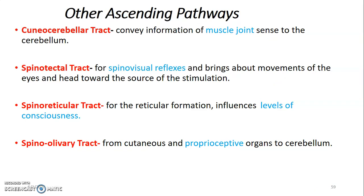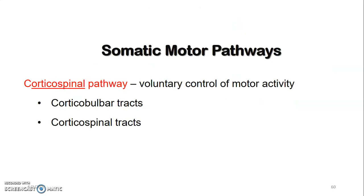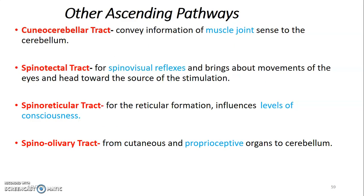Other ascending pathways include the cuneocerebellar tract, carrying information from muscles and joints to the cerebellum; the spinotectal tract, carrying information for spinal visual reflexes that bring about movements of the eye and head; the spinoreticular tract, which regulates levels of consciousness; and the spino-olivary tract from cochlear and proprioceptive organs of the cerebellum. That concludes the ascending pathways — the next lecture will discuss descending pathways.